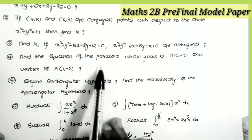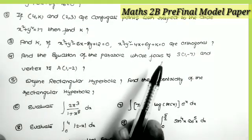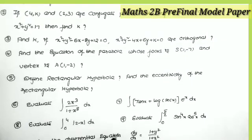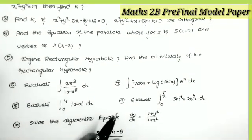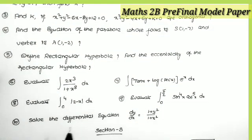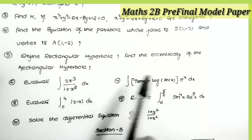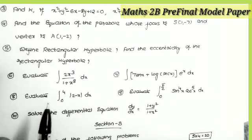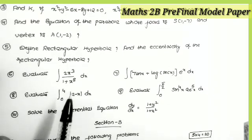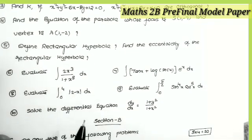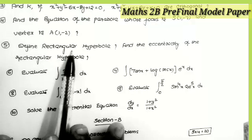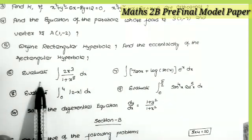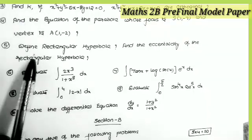The fourth question is from the topic parabola: find the equation of the parabola whose focus is (1, −7) and vertex is (1, −2). The fifth question: define rectangular hyperbola and find the eccentricity of the rectangular hyperbola. The sixth question: evaluate the integral of 2x³ / (1 + x⁸) dx, which is from the topic integration.